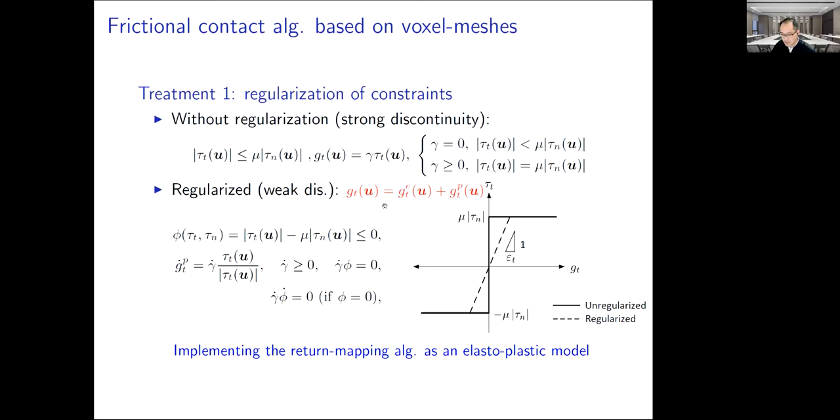We here divide G_t into two parts. One is reversible, the other is non-reversible. Thus, the relationship between G_t and tau_t is a weak discontinuity. In analogy to an elastoplastic model, we can directly implement the return mapping algorithm to update the shear stress.